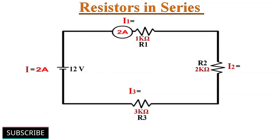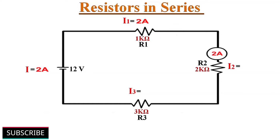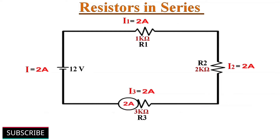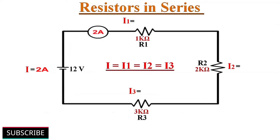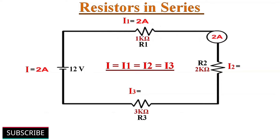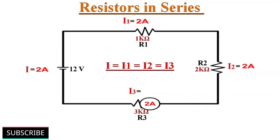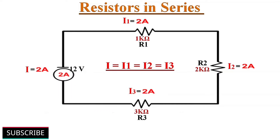If the current is 2 amperes when measured at the input, it will be 2 amperes at any point or even at the output — the current at all points is 2 amperes only. So we can say that the current through the network I equals I1, I2, and I3, where I is the current at input, and I1, I2, and I3 are currents through the series resistors R1, R2, and R3 respectively.